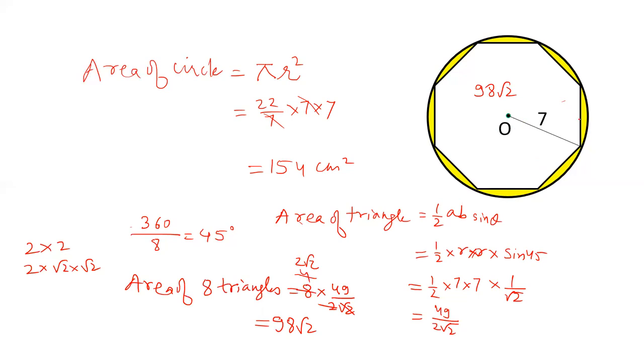We have to find out the area of this yellow region. So, what we have to do? Area of circle minus area of 8 triangles, that is octagon. So, final answer is area of circle minus area of octagon. Area of circle is 154. Area of octagon is 98 root 2. That is the answer.